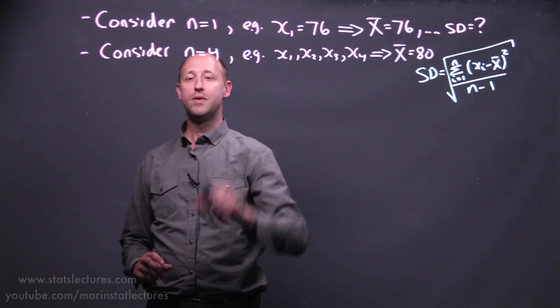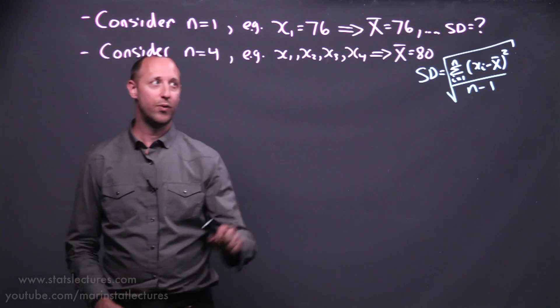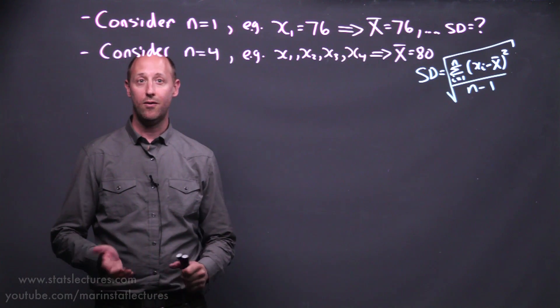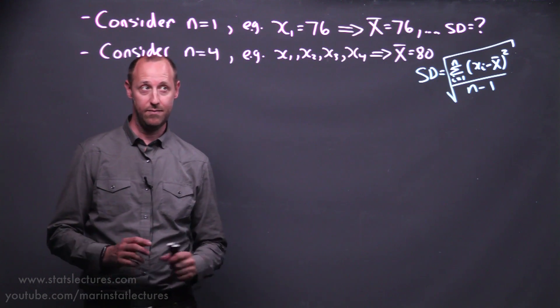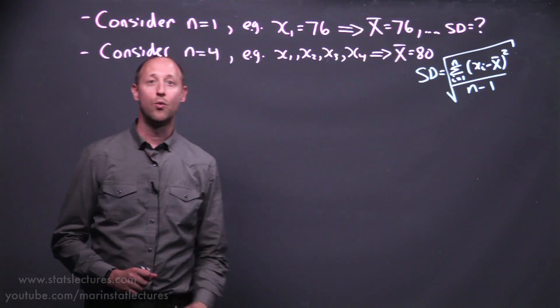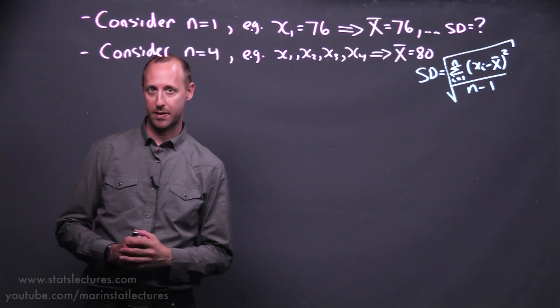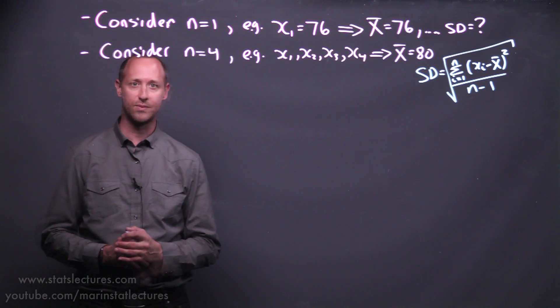First, let's think of a simple example here of having just one observation. So we have x1 being 76. With just one observation, we use that as our estimate of the sample mean. Now if we want to estimate the sample standard deviation, you'll notice that we can't. We've used that observation as our estimate of the mean. We have no data left to try and estimate how far the individuals move from the mean. So that's just a simple exaggerated case of n equals 1.